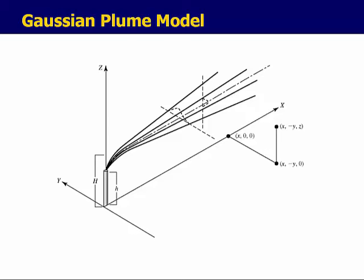The coordinate system we'll focus on has your stationary source at the origin. The plume begins to move horizontally at the effective height H. It travels in the x direction downwind and also spreads in the y and z directions, fanning out in three dimensions as it moves away from the stationary source. The center line is the coordinate upon which this is all based.